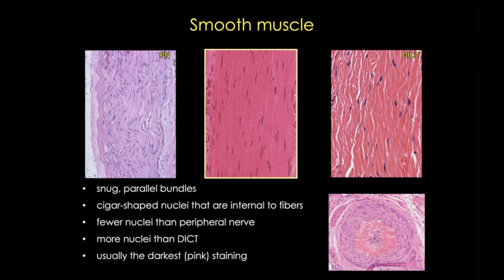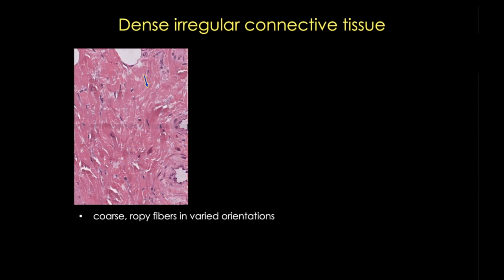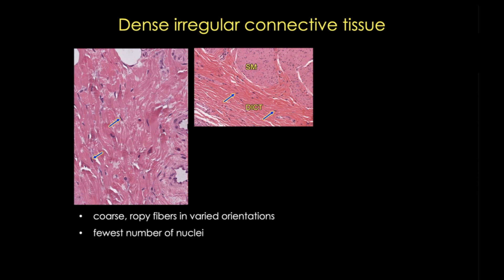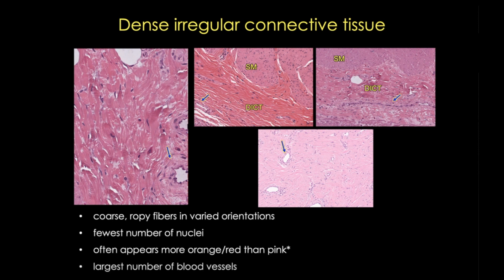Now, what about dense irregular connective tissue? The most obvious characteristic of this tissue is the thick ropey collagen fibers that are variable in both size and direction, and you can really appreciate that in this higher magnification. Dense irregular connective tissue also has the fewest visible nuclei, which lie external to those collagen fibers, and the tissue often appears more red-orange than pink, although this is not always true. In this section of dermis, for example, we see that the tissue is staining a very pale pink, but we see irregular fibers, a lack of abundant nuclei, and abundant blood vessels — and this marks this tissue as dense irregular connective tissue.